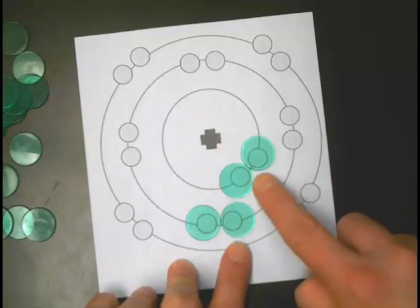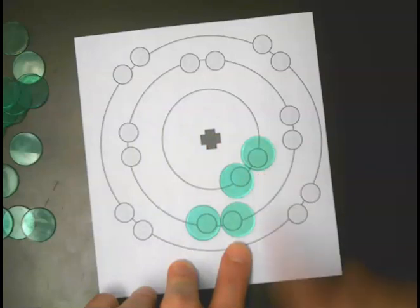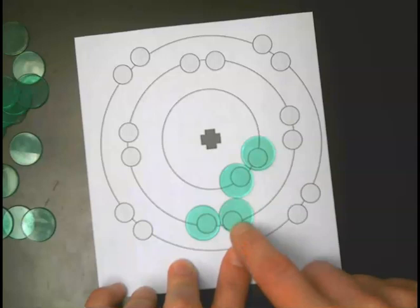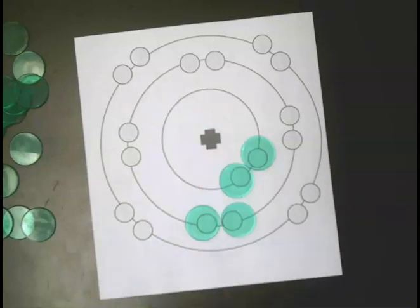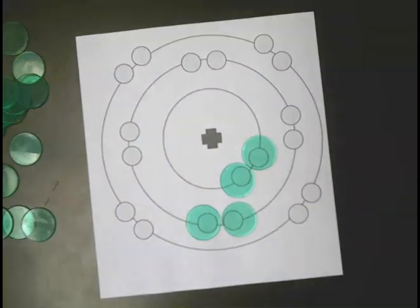But these electrons out here have some shielding from these ones in here. To get an approximation of the effective nuclear charge, or the Z effective, you do the number of protons (four in this case) minus the core electrons (two in this case) to get an effective nuclear charge of two. This means that these electrons feel the equivalent of two of the positive charges in the middle, because the others are shielded by the electrons in the core.